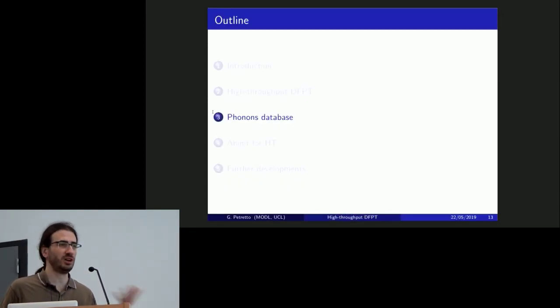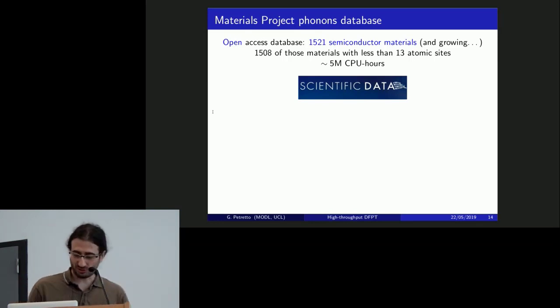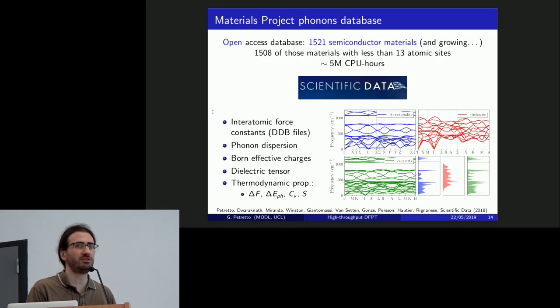We've run for roughly one year, one year and a half, the calculations, and we managed to get the phonons that Joffre mentioned before. This was mainly relatively small structures, still took five million hours, that to me is not such a small amount of time. And we managed to publish the data on the Scientific Data paper, and this comes with the DDB files that are available. So you can just download them to make your post-processing or the already post-processed quantities like thermodynamic properties and things like this.